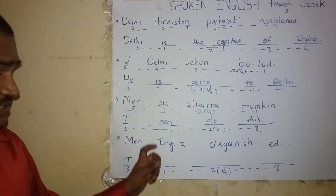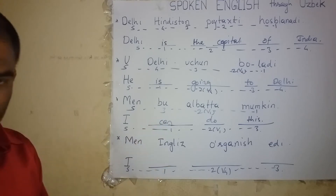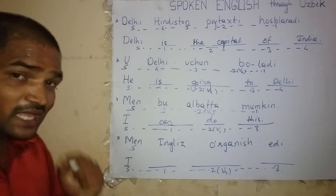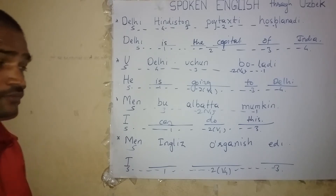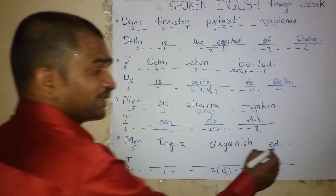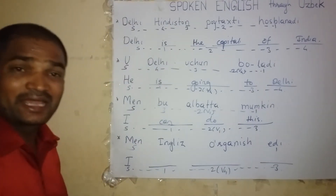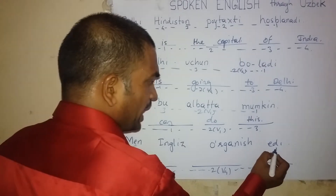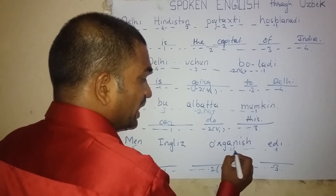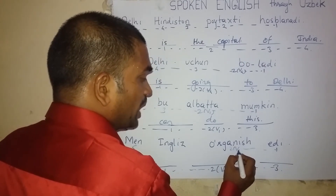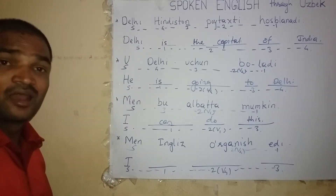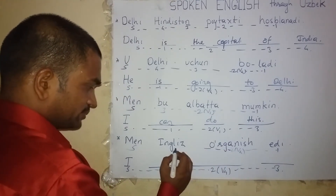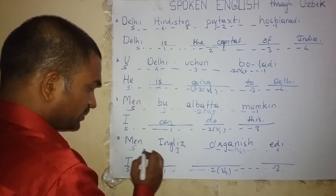Men English organistic edi. Look here — subject is 'men,' the English word for 'men' is 'I.' At the end of the sentence is 'edi,' the English word for 'edi' is 'was.' I was. Before one, about two, is 'organic' — the English word for 'organic' is 'learning.' I was learning English.